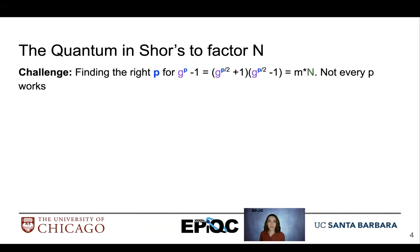We have this challenge of finding the right p to find g to the p minus 1 is equal to m times n. But not every p works. For example, we don't want a value of p that produces a multiple of n. We want factors. We also don't want odd values of p because that will produce fractions. We need an integer.